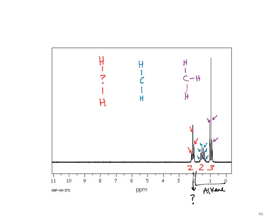We should not try to link these yet because we have more to analyze. If you cannot analyze the splitting patterns — that's fine. At that point you've already looked at IR, mass spec, carbon NMR, and hydrogen NMR. If you can't analyze the splitting pattern, accept it and start piecing it together. We're going to look at those splitting patterns.